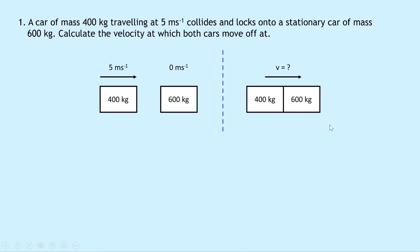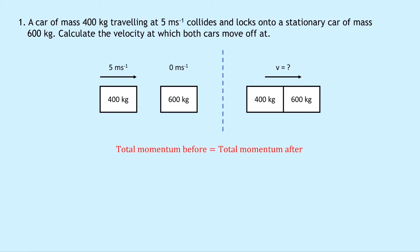We've got our two cars — one is 400 kilograms, the second is 600 kilograms — and after the collision they lock together. The moving car is at 5 meters per second and the second one is stationary at zero meters per second. We need to find the combined velocity after the collision using the principle of conservation of momentum: total momentum before equals total momentum after.